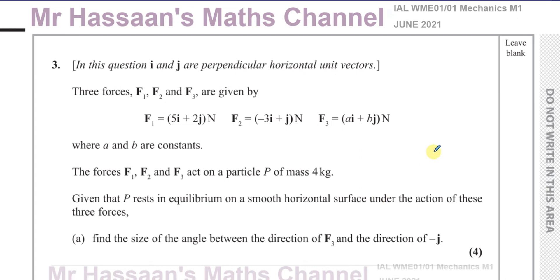Welcome back, this is Mr. Hassan's Maths Channel and I'm now on number 3 from this Mechanics M1 International A-Level Edexcel paper which is from June 2021. Here we're given a question about forces. It says in this question, i and j are perpendicular horizontal unit vectors.